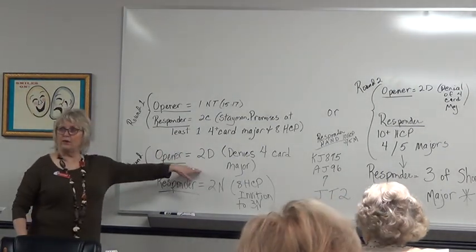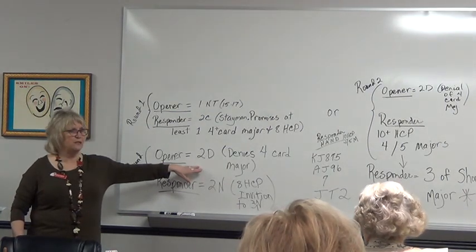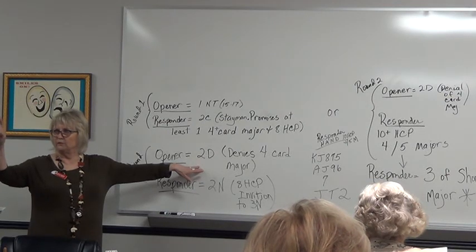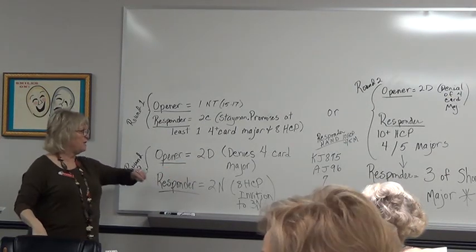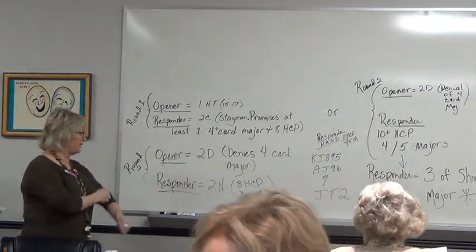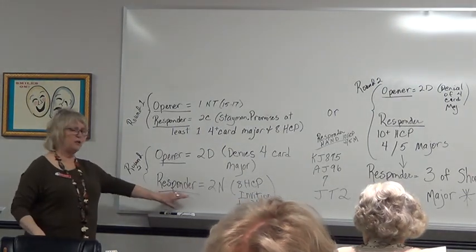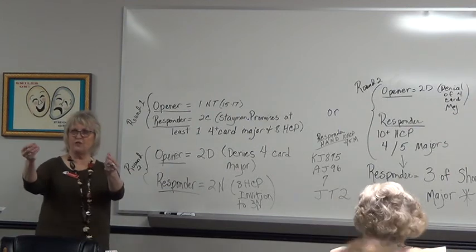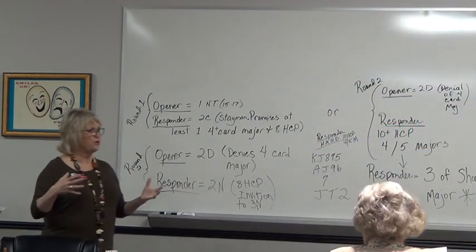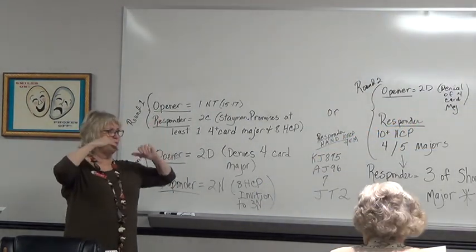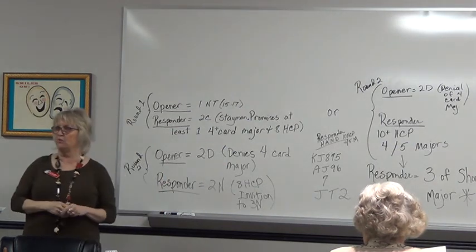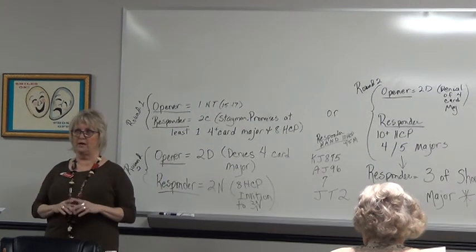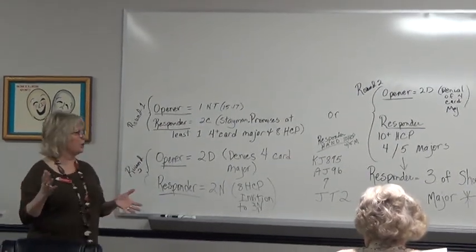Frequently, this is what the opener says: two diamonds. I do not own even one four card major. Don't own them, sorry. Denies a four card major. And the responder will say, usually, two no trump, which is an invitation to game. If the opener's got 17, if they're at the top of their range, they should go on and bid their three no, because they're promised eight points from their responder. Eight plus 17 is 25.